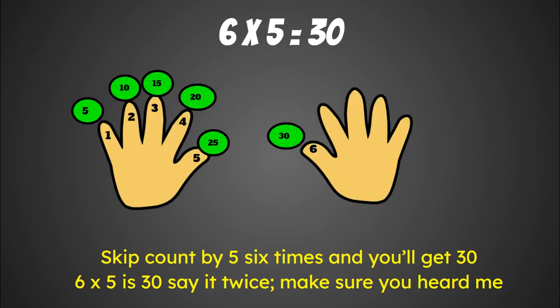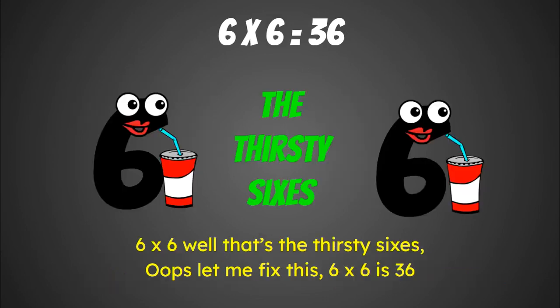Skip count by five six times and you'll get thirty. Six times five is thirty, say it twice, make sure you heard me. Six times six, well that's the thirsty sixes. Oops, let me fix this, six times six is thirty-six.